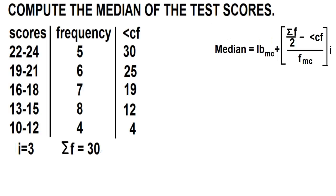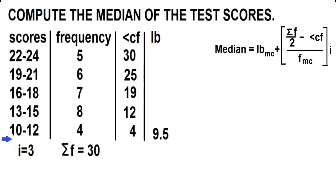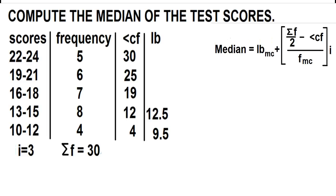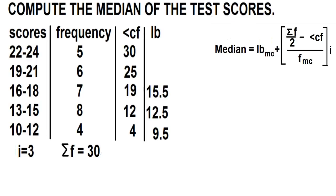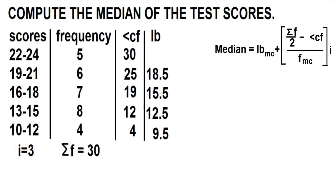It's nice also to add a column for the lower boundary. To find the lower boundary, just subtract 0.5 from each of the lower limits. 10 minus 0.5 is 9.5. 13 minus 0.5 is 12.5. 16 minus 0.5 is 15.5. 19 minus 0.5 is 18.5. 22 minus 0.5 is 21.5.